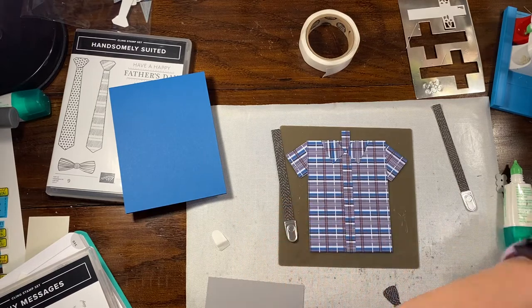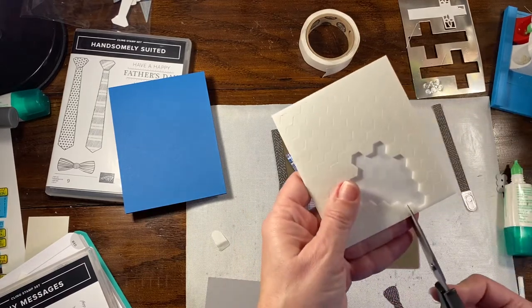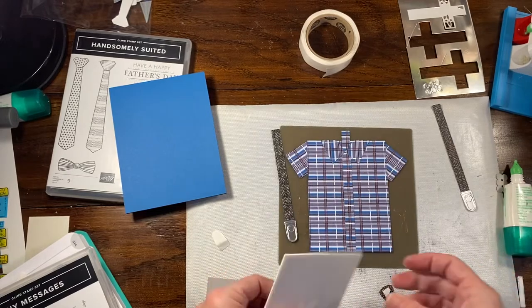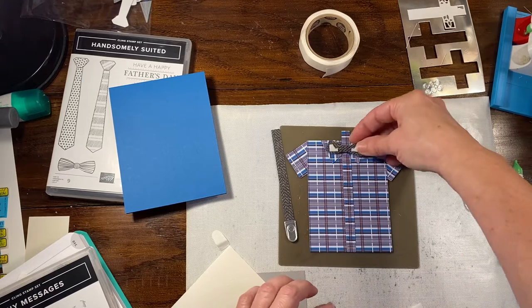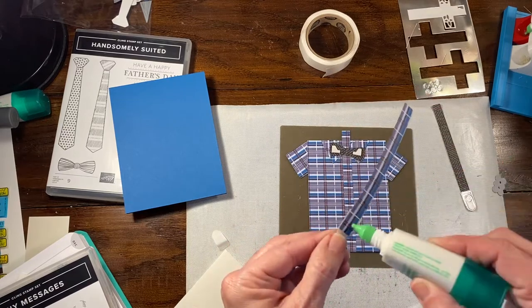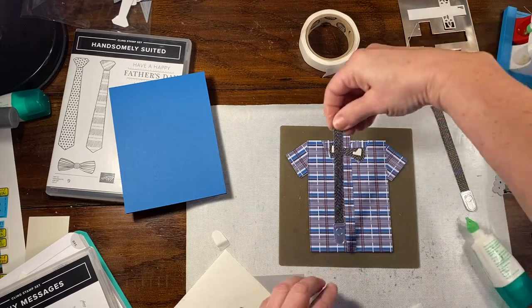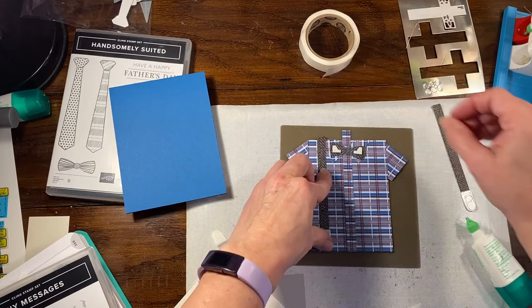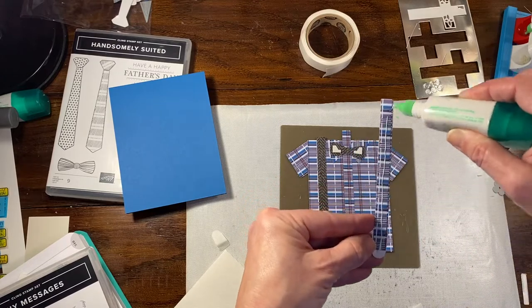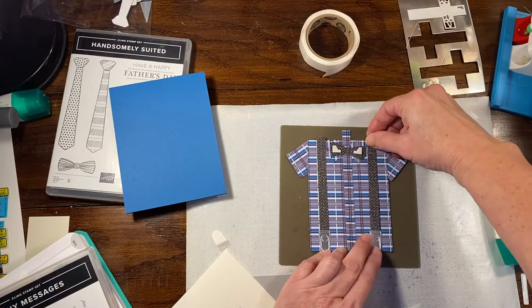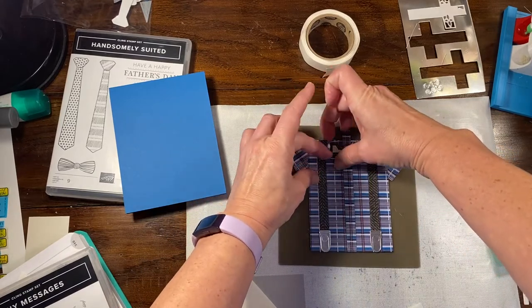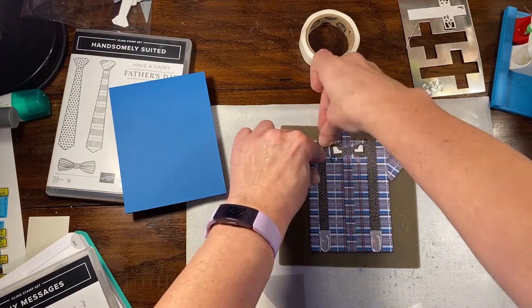I'm going to put this on. You could put this on with dimensionals if you wanted to. I'm just going to use glue because we'll add the bow tie with dimensionals. So, put him on. I just want to make sure this is straight with the top. I'm going to put the bow tie on with a dimensional. I don't think a full one is going to fit, so I'm going to use two pieces.